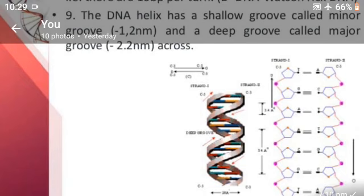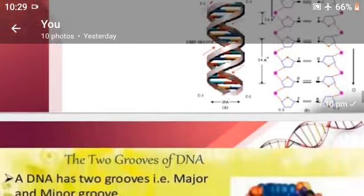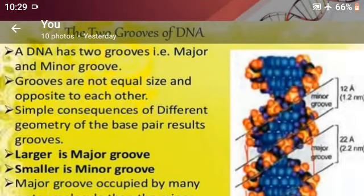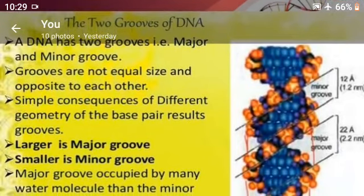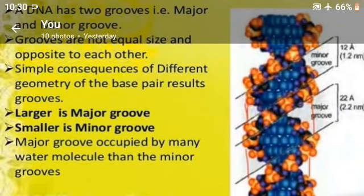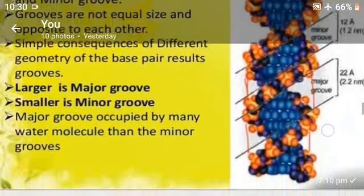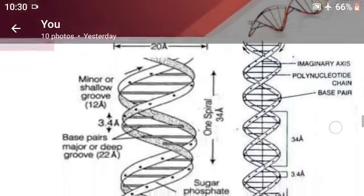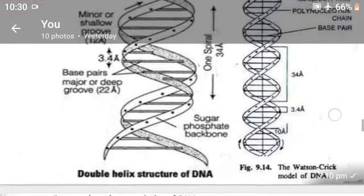The minor and major grooves can be seen in the DNA double helix. The two grooves of DNA — major and minor — are not equal in size and are opposite to each other. The difference in groove size is a simple consequence of the different geometry of the base pairs. The larger is the major groove and the smaller is the minor groove. The major groove is occupied by more water molecules than the minor groove.